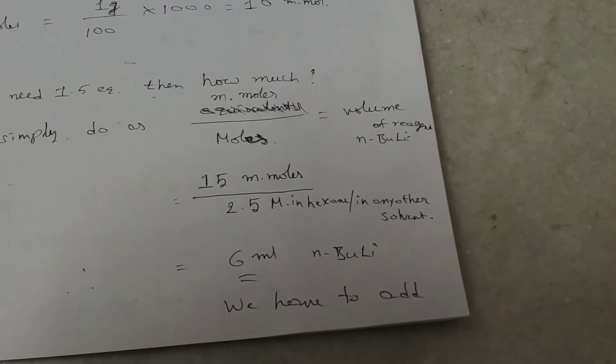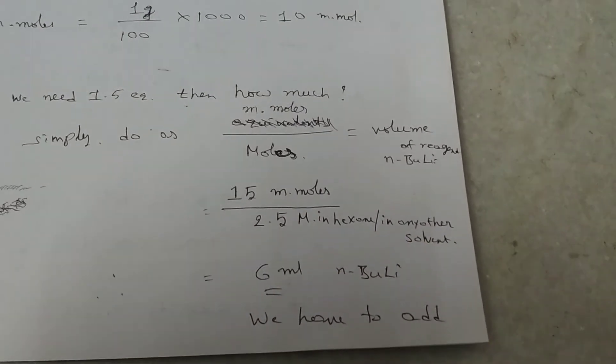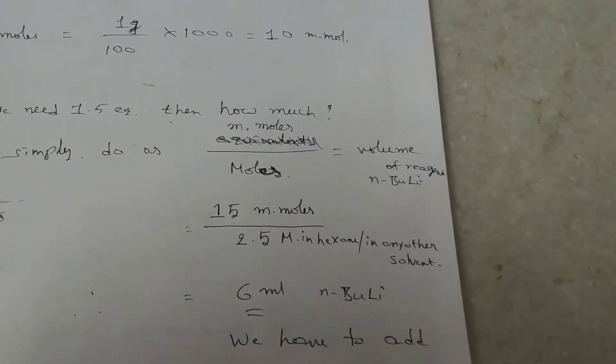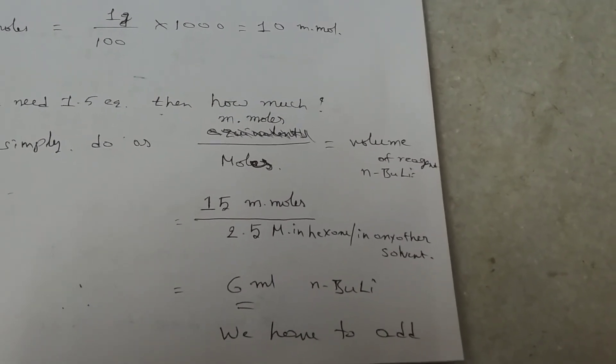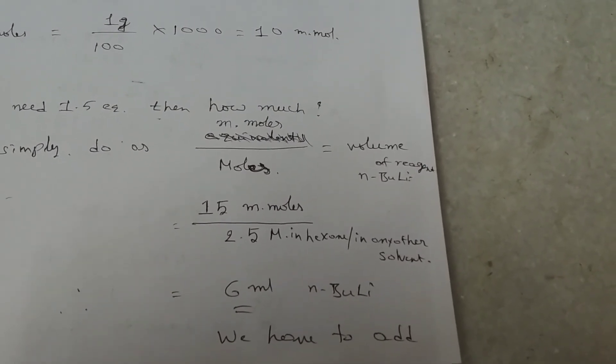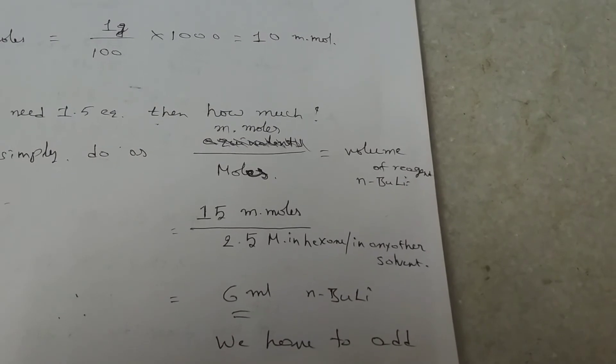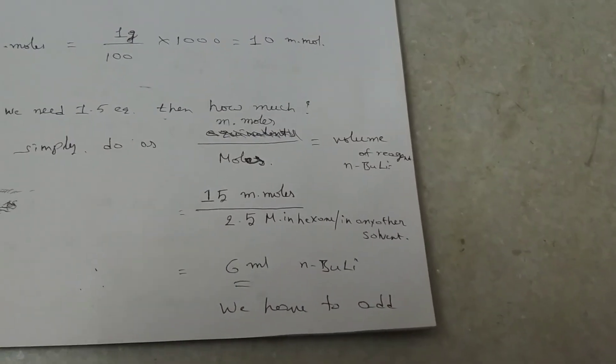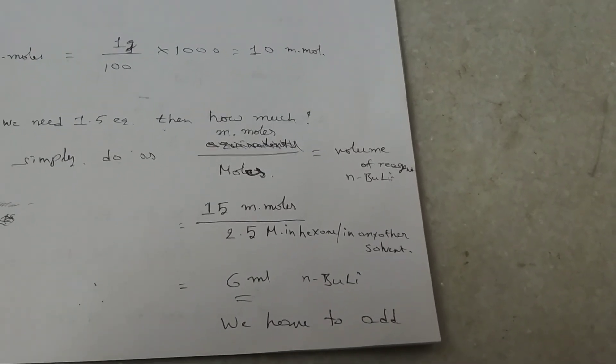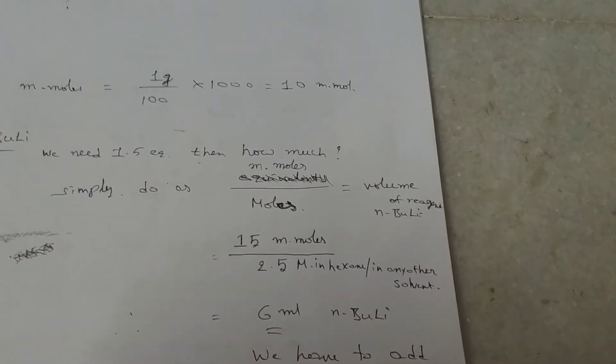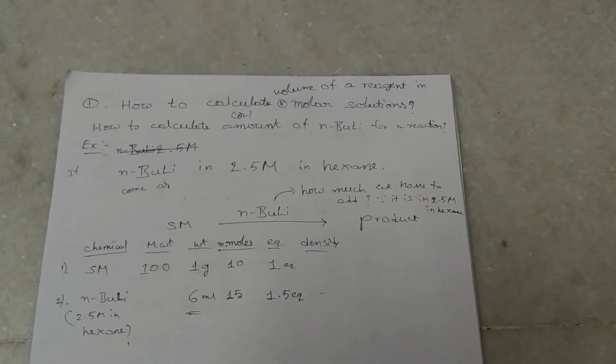So 15 millimoles divided by, we are using 2.5 molar in hexane. So 15 millimoles divided by 2.5 molar is equal to 6 mL of n-BuLi. So this is the amount we have to add for n-BuLi reaction. Are you interested? Please check this one.